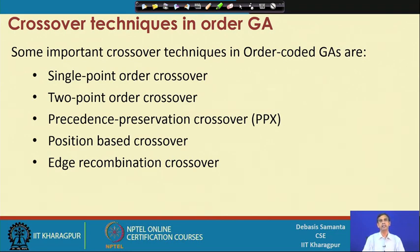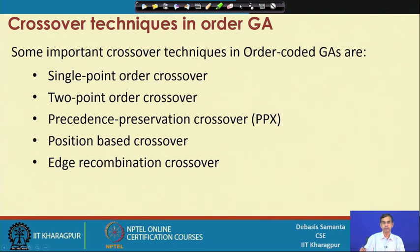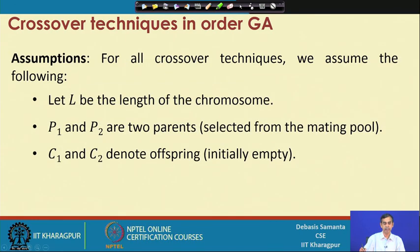We have listed five important crossover techniques for order-coded GA: single-point order crossover, two-point order crossover, precedence preservation crossover (PPX), position-based crossover, and edge recombination crossover. We will discuss all these techniques one by one in the subsequent slides.